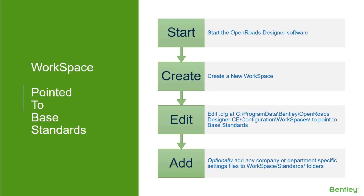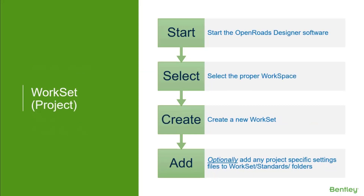Optionally, you can layer in additional changes to settings at the workspace level — things that are company-specific or department-specific can be added into the standard structure. To create a project or workset, start up your software, select your workspace, choose 'Create New Work Set,' and you're off and running. If you want things specific to your workset or project, you can optionally add those files into the folder structure already provided. But nothing is actually required.